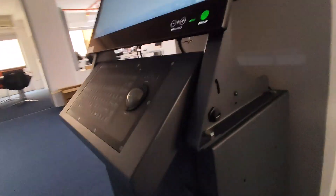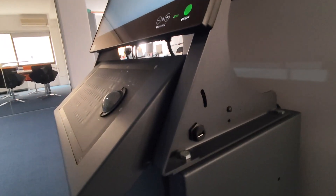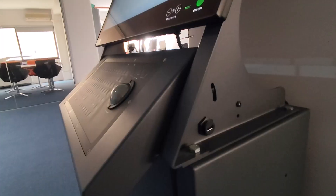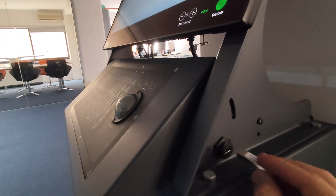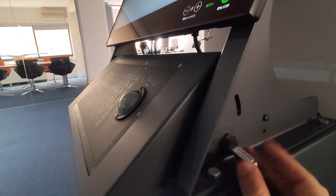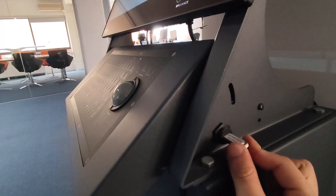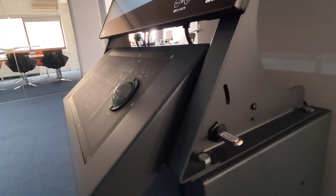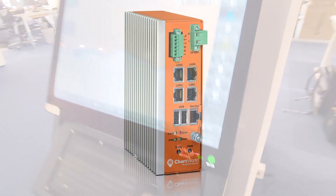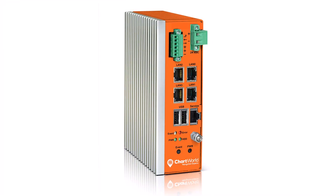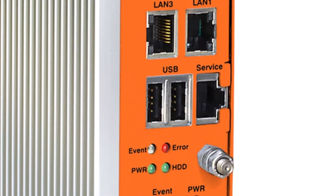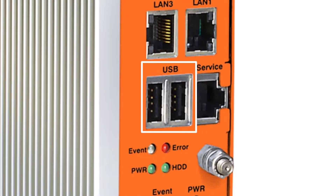Connect your USB to your eGlobe G2. Ensure that no other USB stick is connected to the eGlobe G2. If you have eChart Secure, connect your USB stick to the designated USB port on the eChart Secure gateway.